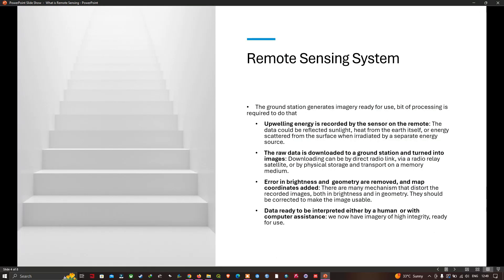I'd like to look at remote sensing in four blocks, a system view. The first block is the energy that is detected by the platform. The upwelling energy is recorded by sensors on the remote sensing platform. The data could be reflected sunlight or heat from the earth itself, or energy scattered from the surface when irradiated by a separate energy source.